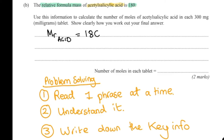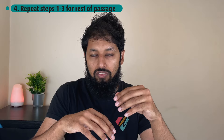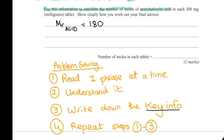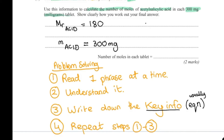If they say this beaker has 10 millilitres of HCl, you put down: beaker volume = 10 ml. You need to put that information down for yourself. So in our case: Mr = 180. When I say write down the key info, pretty much 99.9% of the time you're writing an equation — so you need to be comfortable with algebra. Number four: repeat steps one to three for the rest of the passage. It's asking us to work out the number of moles, so: moles of acetylsalicylic acid = ? (this is what we are working out).